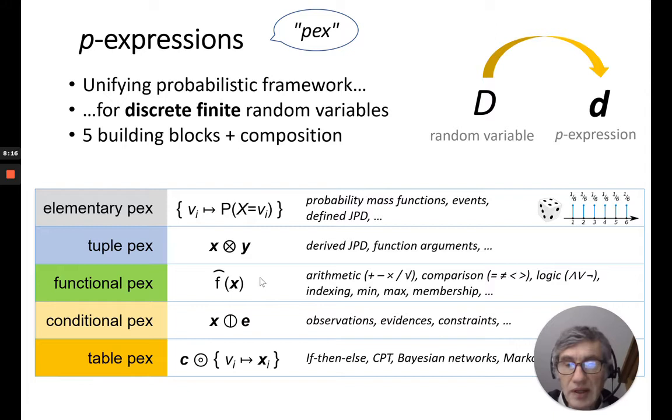Something very important, and in all the functions I mentioned here, like addition, subtraction, these are pure functions. Another point is that in a functional PEX, there is only an unary function. And should you have to model a function with two arguments, like addition, you have to use, first, the tuple PEX to assemble the two arguments together, and then apply the function, the functional PEX, on this tuple PEX.